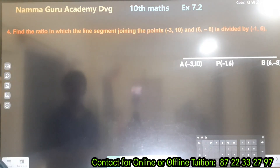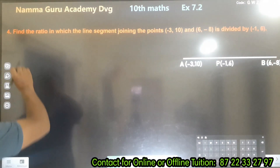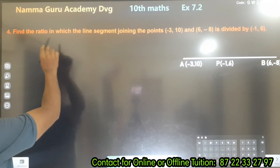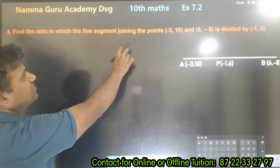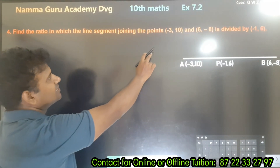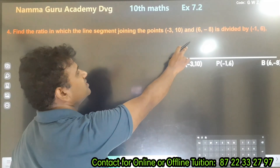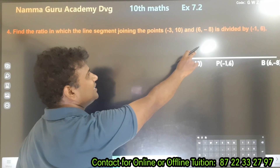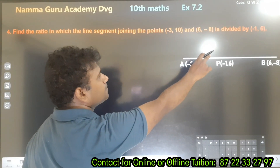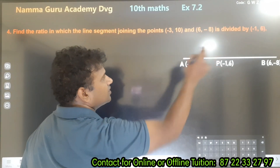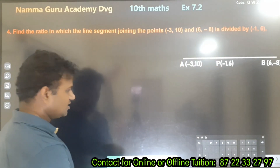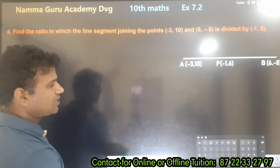Find the ratio in which the line segment joining the points (-3, 10) and (6, -8) is divided by the point (-1, 6). So this is the question.